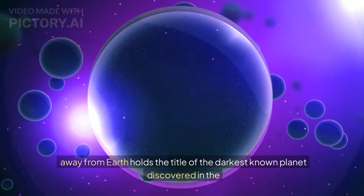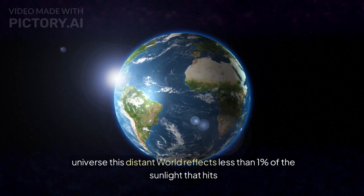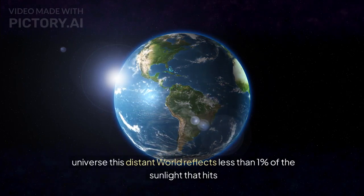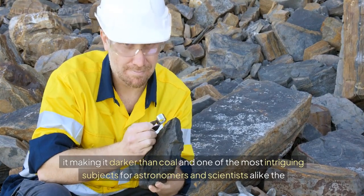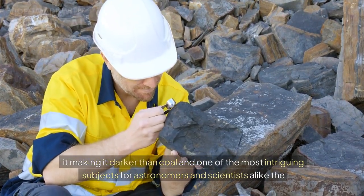TrES-2b, another fascinating exoplanet located about 750 light years away from Earth, holds the title of the darkest known planet discovered in the universe. This distant world reflects less than 1% of the sunlight that hits it, making it darker than coal.